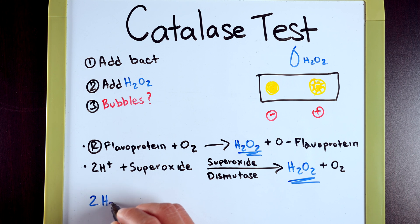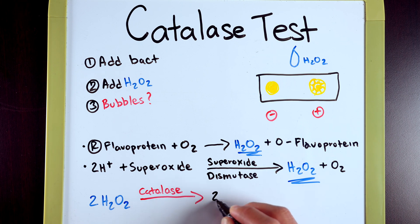Catalase will take these two hydrogen peroxide molecules and turn it into two H2O molecules as well as an oxygen molecule.